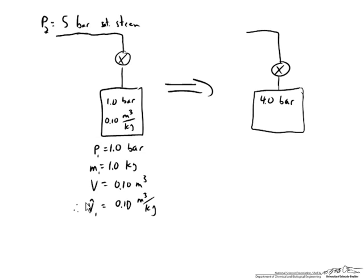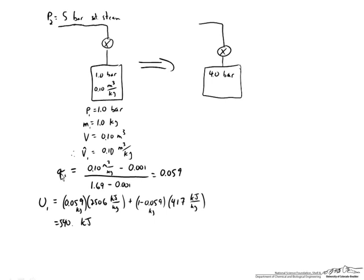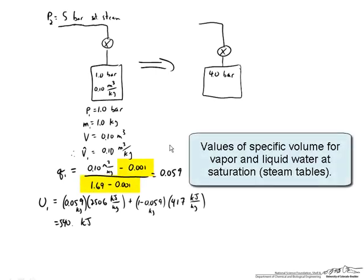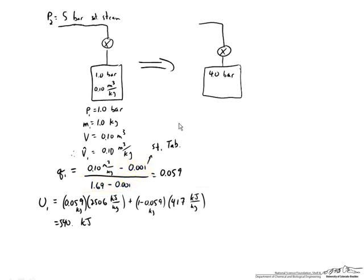The first thing we can do is determine the quality of the stream, which is the mass fraction in the vapor. We can do this by the lever rule: take the per mass volume of 0.1, subtract the volume of the liquid, and divide by the volume of the vapor minus the volume of the liquid, which equals 0.059. These numbers 1.69 and 0.001 come from the steam tables at 1.0 bar. Because the per mass volume is between the liquid and vapor volumes, we have a saturated two-phase system with a quality of 5.9%.